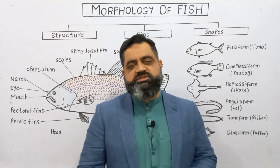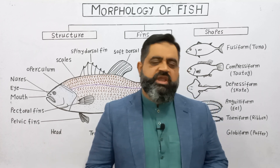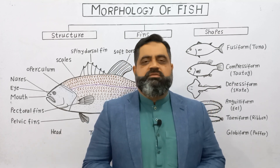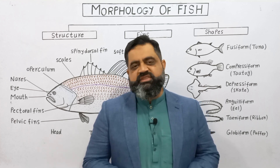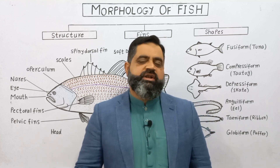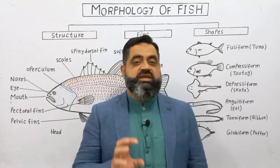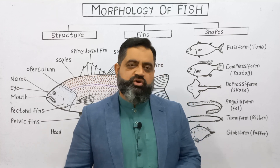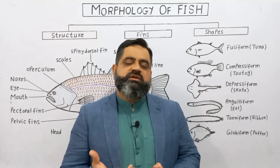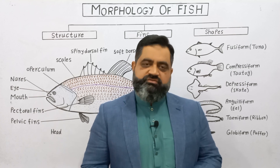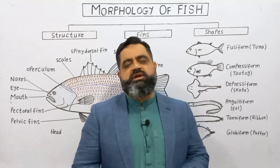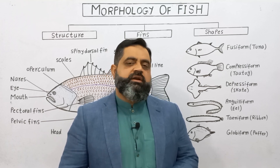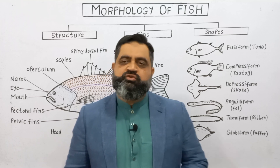Today we are going to discuss external morphology of a fish. Fish are specialized animals which belong to Phylum Chordata. They live in water — they are aquatic — and usually they have gills and fins on their body. They also have scales on their body, which are very important characters of the fish. To understand the morphology of fish, we need to look at the diagram of a fish.